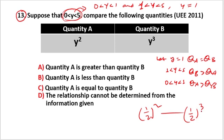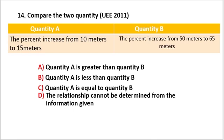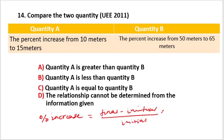1 over 2 cubed equals 1 over 8. Since we are comparing decreasing and increasing powers, when y is between 0 and 1, the higher power gives a smaller value. The percentage increase formula is: percentage increase equals final value minus initial value, divided by initial value, times 100%.